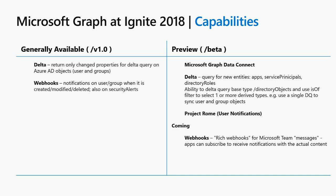In terms of capabilities, what we've added in the past year is delta queries. Previously, you had to manage the dataset so you wouldn't repeatedly retrieve the same information. Now we support delta queries across some of the data. We've added webhooks, which are a publish-subscribe or PubSub mechanism — you can subscribe to notifications on changes to a certain entity or entity type. We notify you what entity was updated, and then you retrieve the updated information. Coming soon: Microsoft Data Connect, extending delta queries across more entities, Project Rome for cross-device user notifications, and rich webhooks for Teams messages that push content along with the notification.